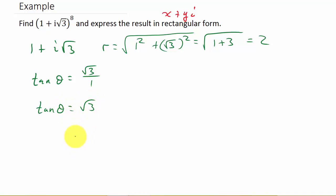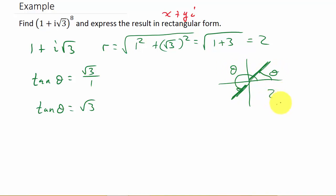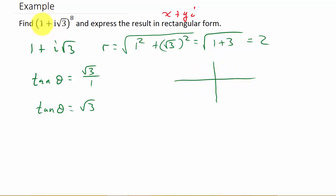Tangent theta equals y, which is square root of 3, over x, which is 1. So tangent theta equals square root of 3. Now, tangent is positive in the first quadrant and also in the third quadrant — so which quadrant is our angle in? To figure out which quadrant it's in, we need to plot this. If we plot 1 and square root of 3, we can see we're in the first quadrant. So tangent theta equals square root of 3 gives us theta equals 60 degrees.